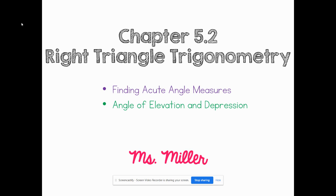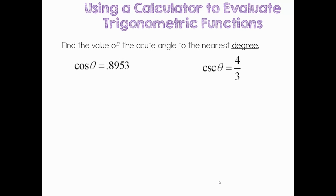We'll start 5.3 next video. The last things in this chapter are finding acute angle measures and finding opposite sides using trigonometry, and also finding angles of elevation and depression. Finding an acute angle is when you're given cosine of theta — theta represents an acute angle. The directions ask us to find to the nearest degree, so it's really important that your calculator's mode is in degree. On a scientific calculator, in the bottom corner it'll say 'deg' for degree and 'rad' for radian. Your graphing calculator defaults to radian mode when you clear it.